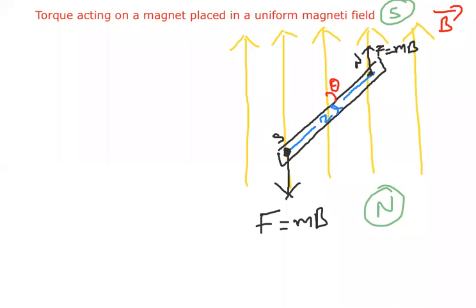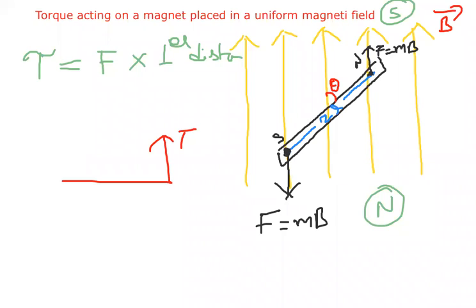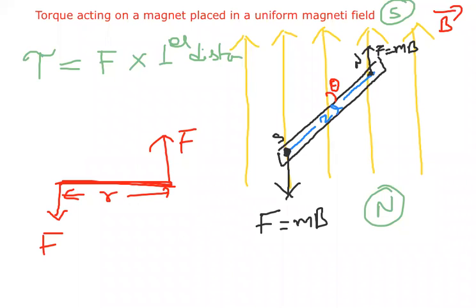Our target is to find the torque. We can write the torque formula as: one of the force into perpendicular distance between the two forces. When you take a couple — two equal and opposite forces acting on a body but not at the same point — the torque is one of the forces into the perpendicular distance between them.